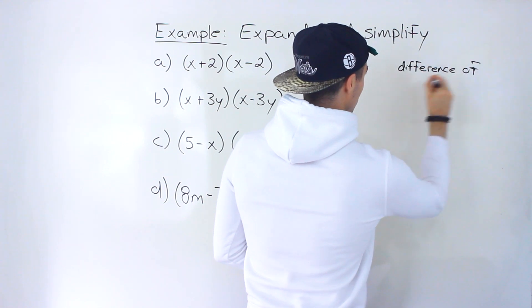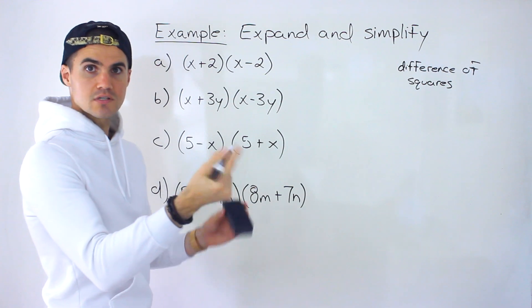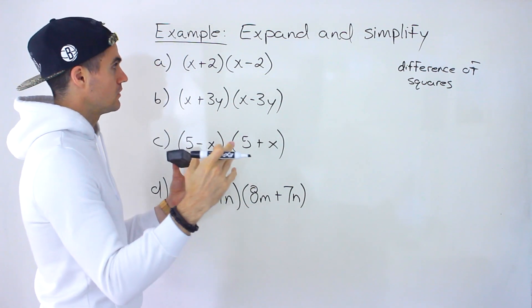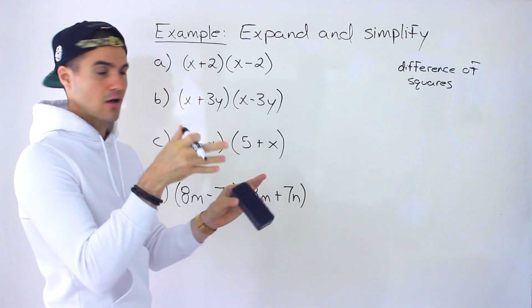So in the video before we went over squaring binomials to get that perfect square trinomial. That's when you have a binomial and then you're just squaring it or multiplying that binomial by itself.